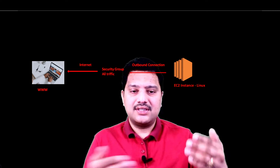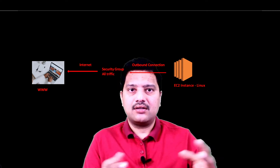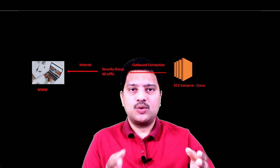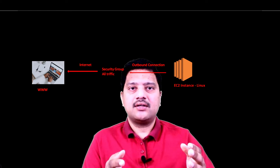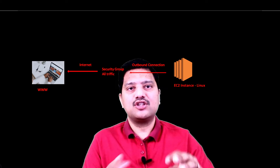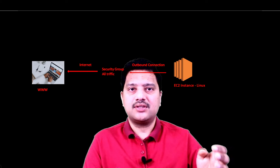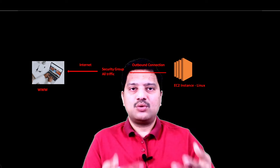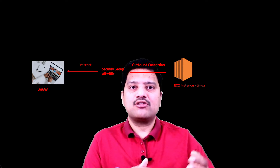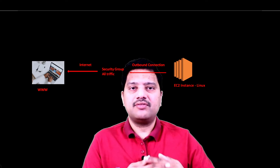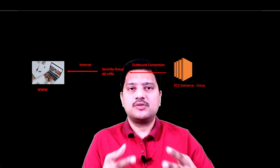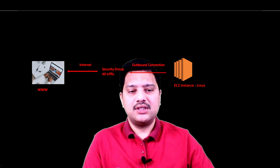With both these diagrammatic representations, you should understand that a security group is a security layer at the network level which allows traffic to your EC2 instance based on the rules you have defined. For inbound rules, you specify particular ports. For outbound rules, you specify what traffic is allowed to the internet.